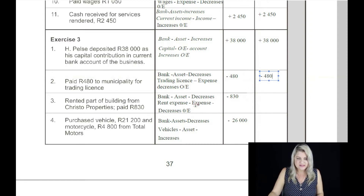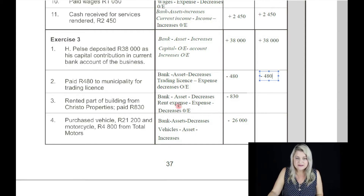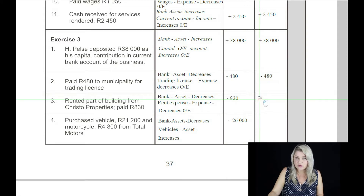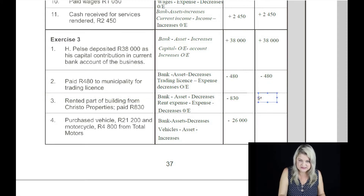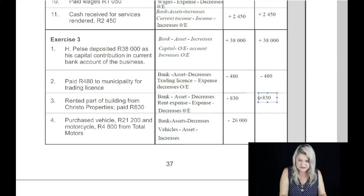The next transaction, number three: rented part of a building from Crystal Properties, paid 830 Rand. Bank is an asset — it decreases by 830 Rand. Rent expense is an expense and an expense always decreases owner's equity — 830 Rand.